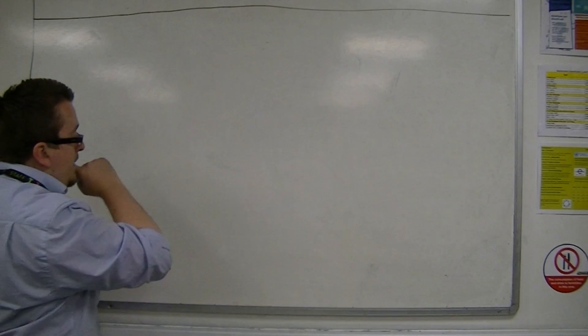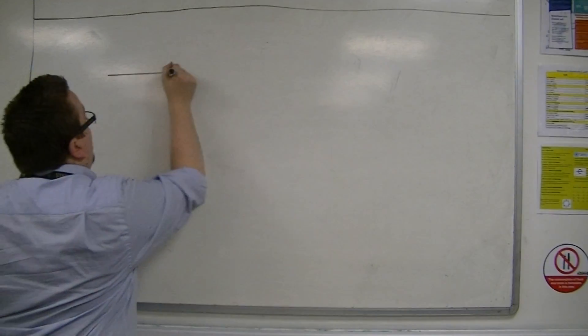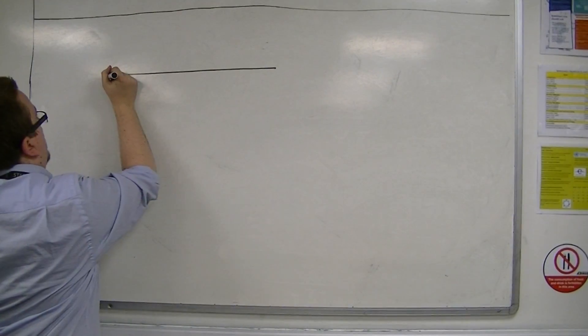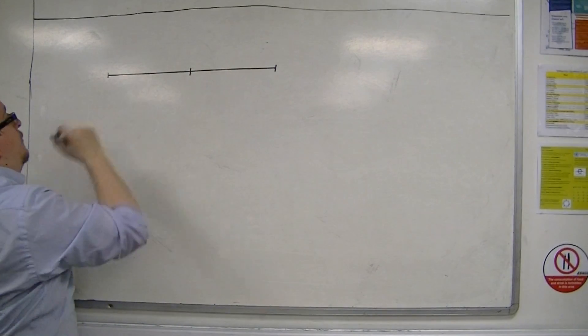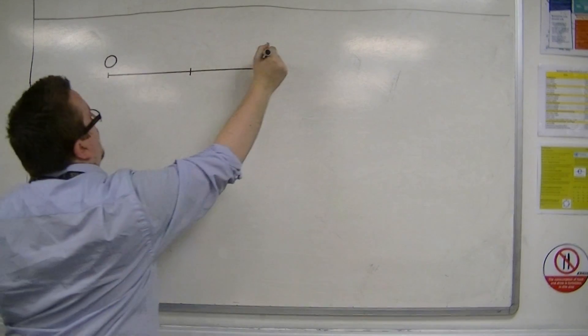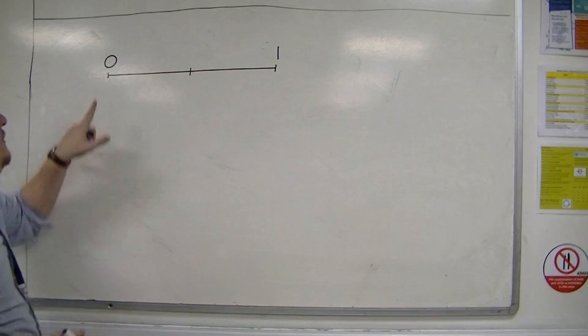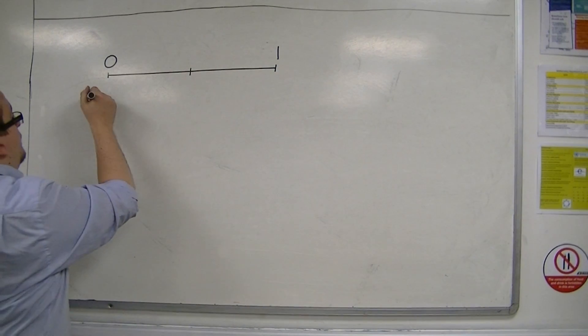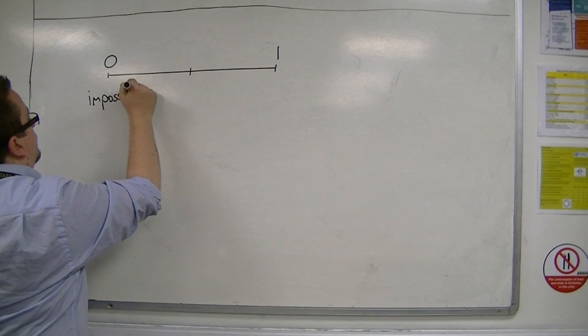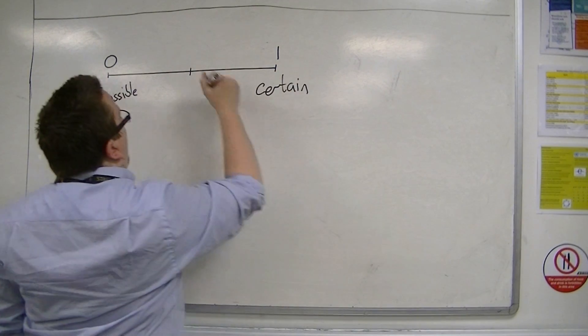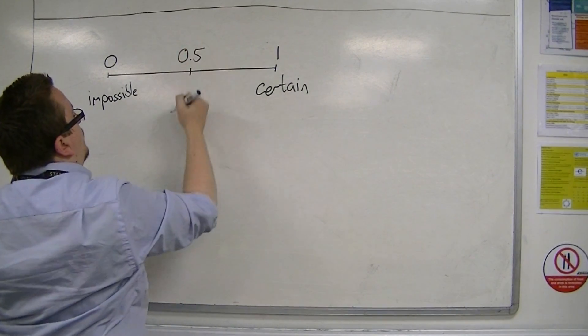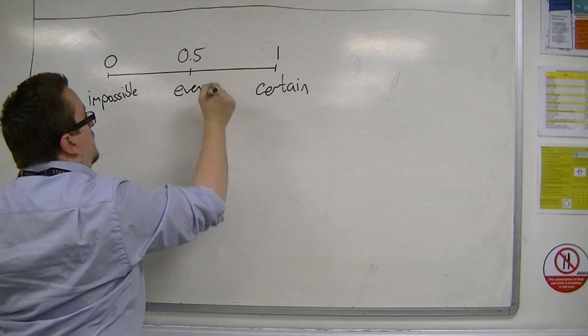Just to remind you then, probabilities are given on a probability scale from 0 up to 1, where 0 is impossible, 1 is certain, and then midway would be 0.5, so evens.